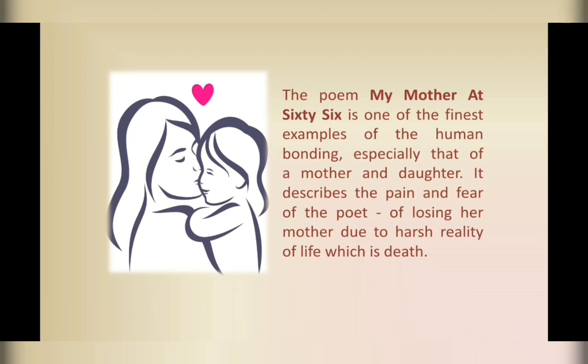The poem My Mother at 66 is one of the finest examples of human relationship — the relationship between mother and daughter. It shows the affection and fear which the daughter experiences when she sees her mother growing old. She is afraid that she will soon lose her mother because her mother was heading towards death due to old age. She finds dullness on her face and realizes that very soon, because of old age, she will lose her mother.